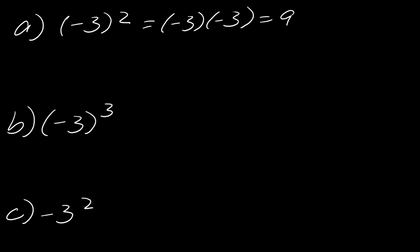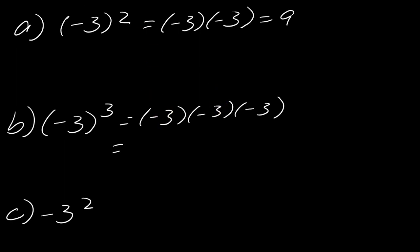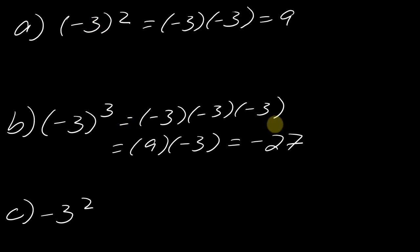Now let's compare that to negative 3 in parentheses, cubed. If I write this all out, this is negative 3 times negative 3 times negative 3. Negative 3 times negative 3 is 9, but still times negative 3, so this one equals negative 27. Sometimes people think that if it has parentheses around it, then it's just going to be positive — but that's not true. It depends on whether the exponent is even or odd. If you have an even number of negative things being multiplied together, the result is positive. If you have an odd number, the result is negative.